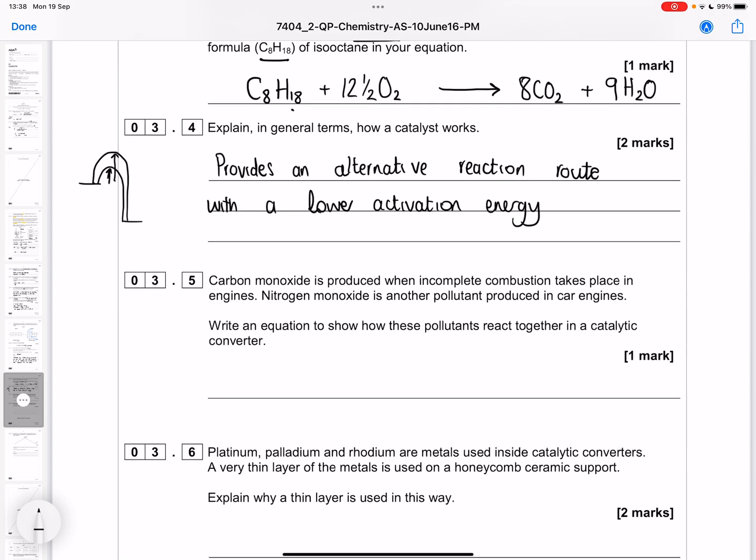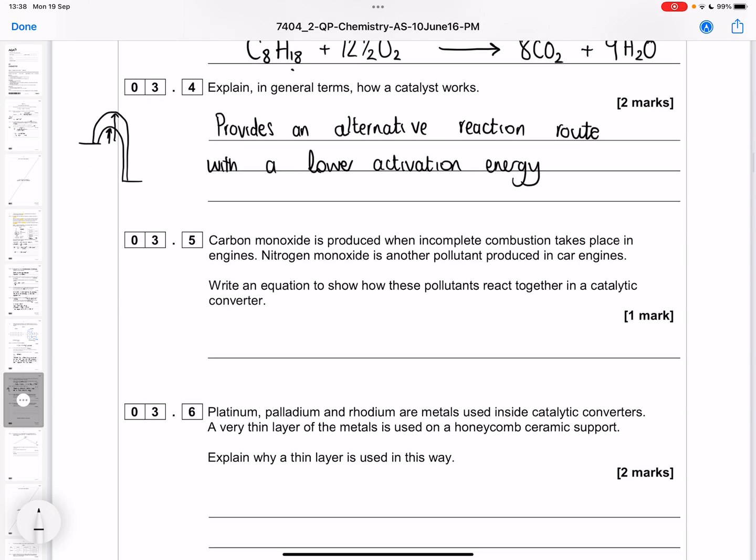Carbon monoxide is produced when incomplete combustion takes place in engines and nitrogen monoxide is another pollutant. Write an equation to show how these react together in the catalytic converter. Carbon monoxide and nitrogen monoxide, when they react together, they combine to form two slightly less polluting gases. We're going to get carbon dioxide and nitrogen.